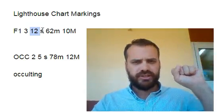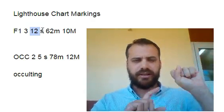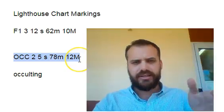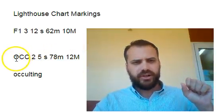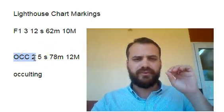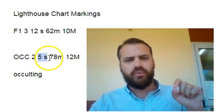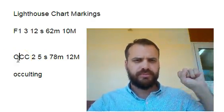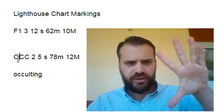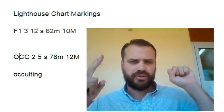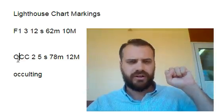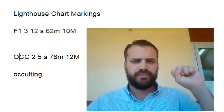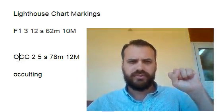If we look at the second lighthouse in this list, it's occulting. It's going to occult twice and then it's going to wait 5 seconds. So that's going to look like this: long flash, long flash, wait 5 seconds — 1, 2, 3, 4, 5 — then long flash, long flash, wait 5 seconds again. So those are our two different types of lighthouse flashing patterns.